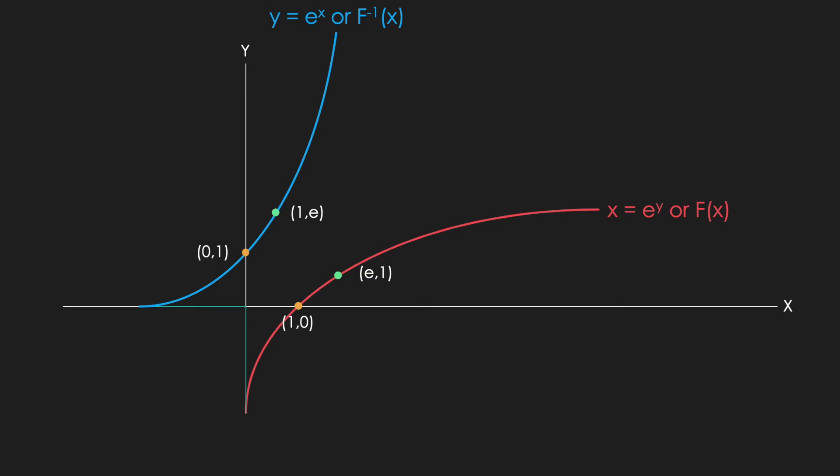one comma zero, and finally e comma one. If we were to take the slope of the lines going through each green and orange pair, we'd find that the slopes are reciprocals of each other. And this should make sense too. The inverse function essentially flip flops the x's and y's on the original, so it only follows that the rise and run will be flipped as well.